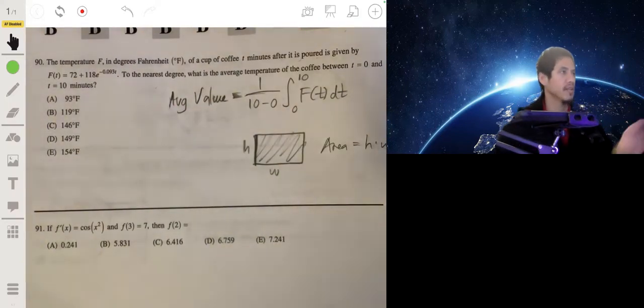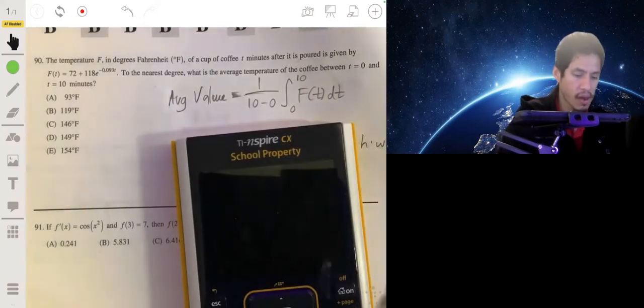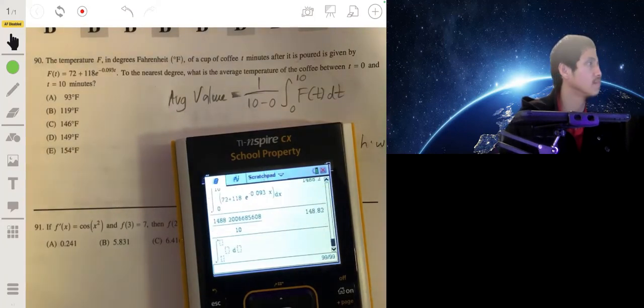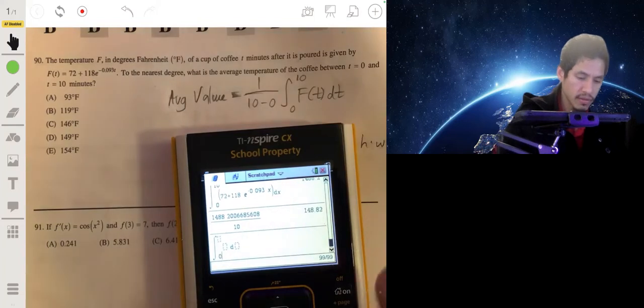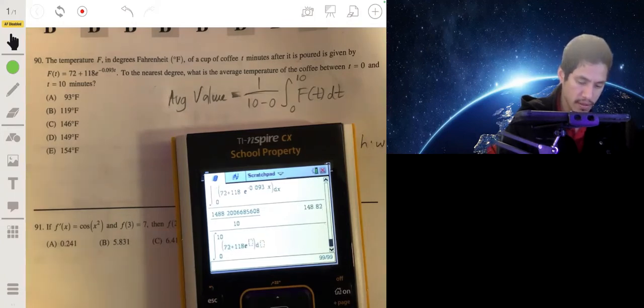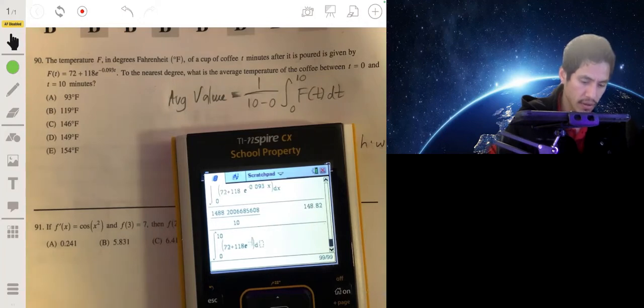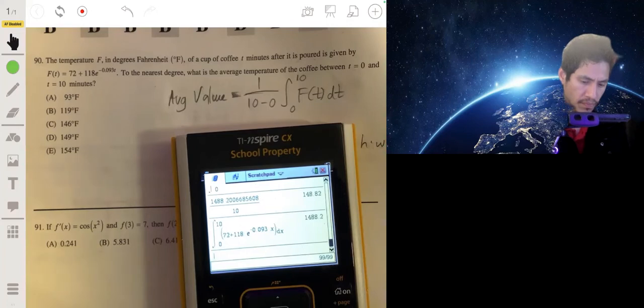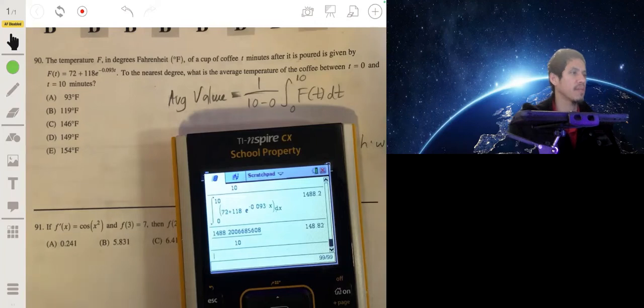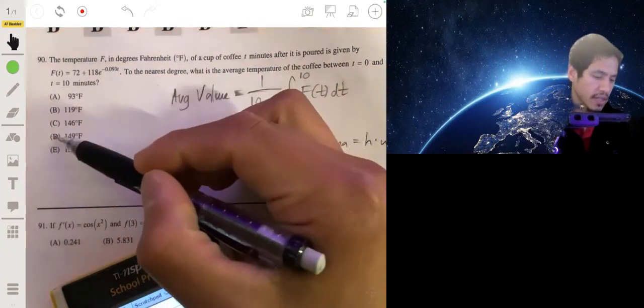You can just do this in your calculator. We'll integrate this, then divide by 10 or multiply by 1/10. That gives 148.82, so the answer is D.